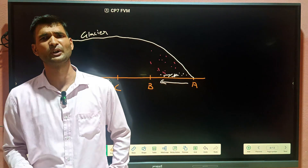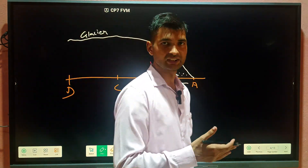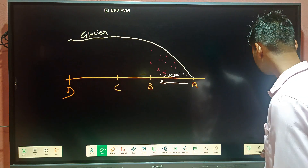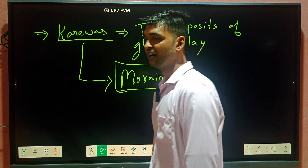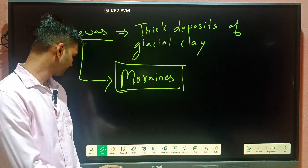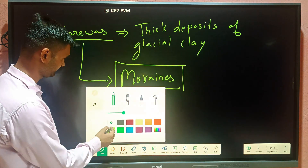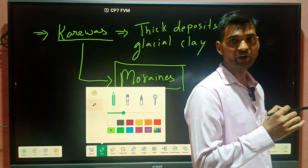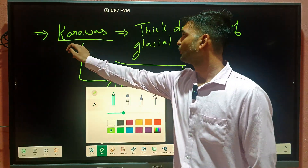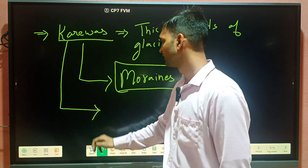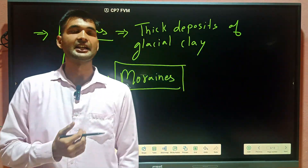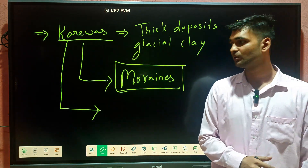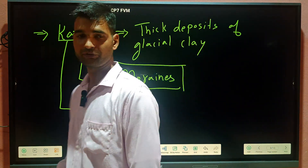There are two types of moraines: Lateral Moraines and Medial Moraines. Coming back to the topic — Karewas — these Karewa soils are very good for growing saffron, which is called Kesar in Hindi. There is also a type of saffron called Zaffran.